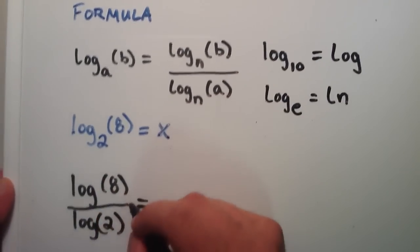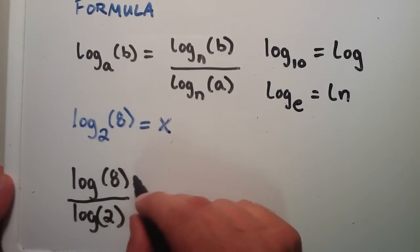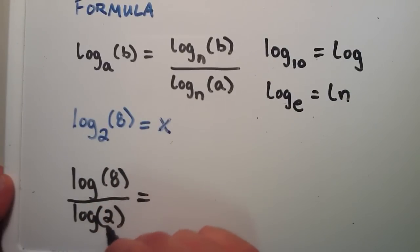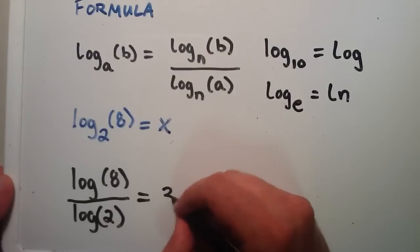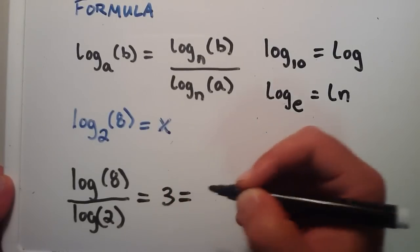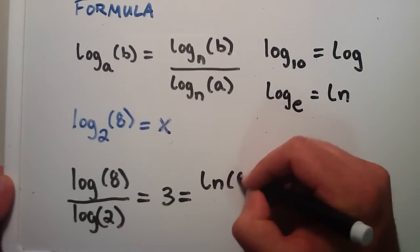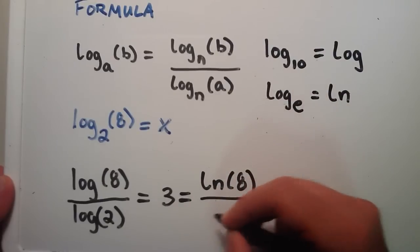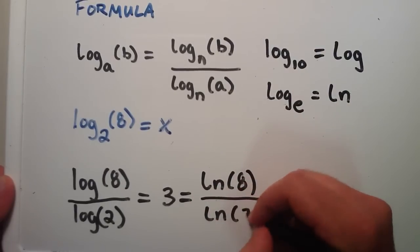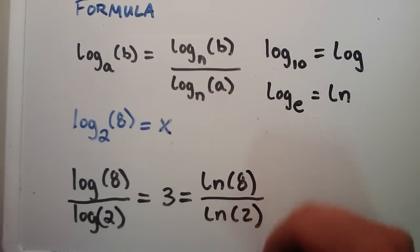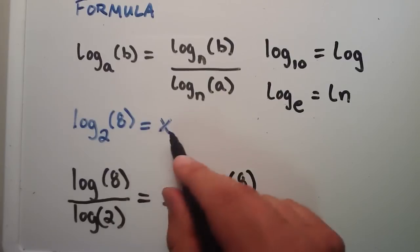And if we plug this in on our calculator, we find that log base 10 of 8 divided by log base 10 of 2 is equal to 3. And we could have just as easily found it by doing the natural log of 8 divided by the natural log of 2.